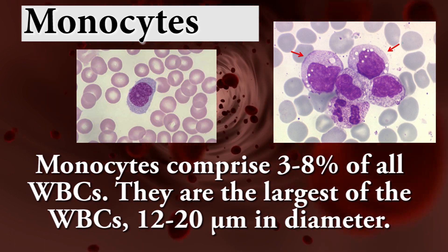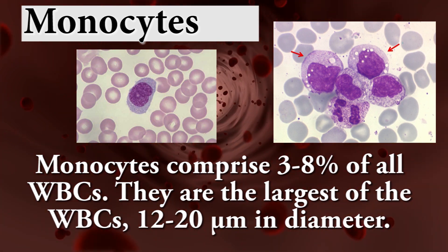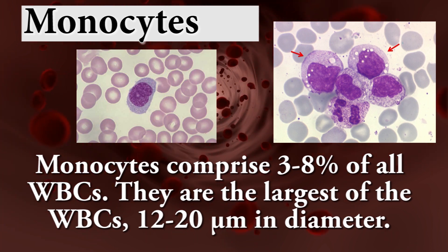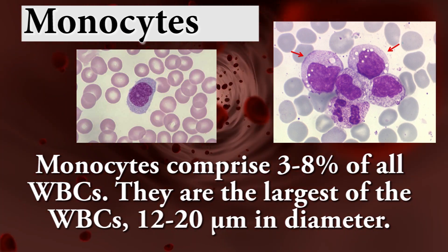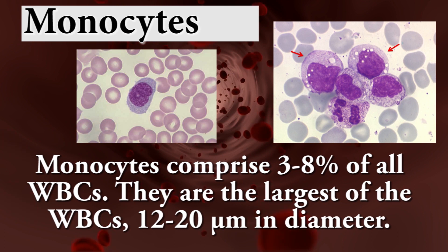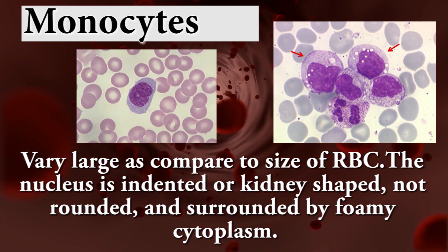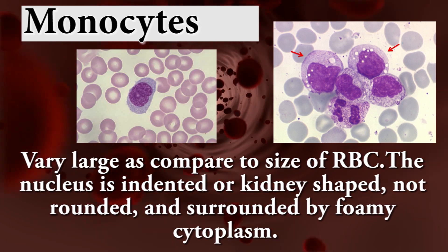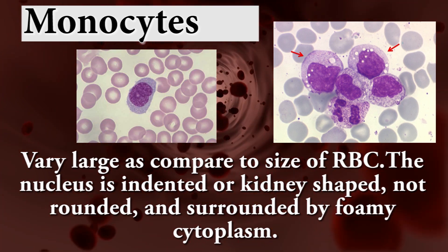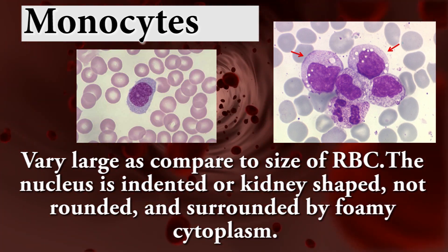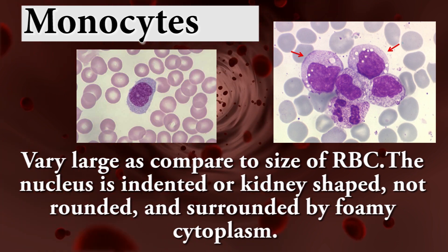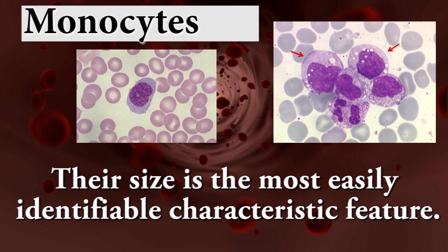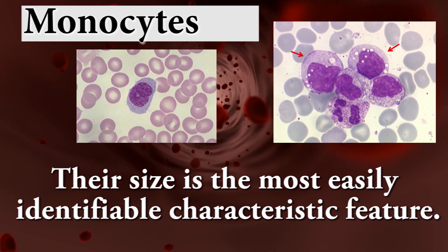Monocytes comprise 3 to 8% of all WBCs. They are the largest of the WBCs — 12 to 20 micrometers in diameter — very large compared to RBCs. The nucleus is indented or kidney-shaped, not rounded, and surrounded by a frosted cytoplasm. Their size is the most easily identifiable characteristic feature.